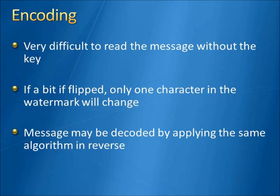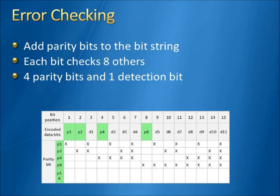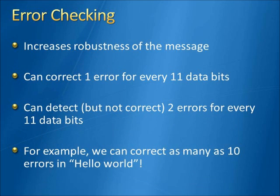The third and probably most complicated part of this process is error checking. To do this, we're going to use a process called Hamming code, where we generate 4 parity bits and 1 detection bit for 11 data bits. Each one of these bits is dependent on the value of 8 others using an XOR. By associating these bits with 11 data bits, we can accurately correct one error for every 11 data bits in a string, and detect — though not correct — two errors for every 11 data bits.